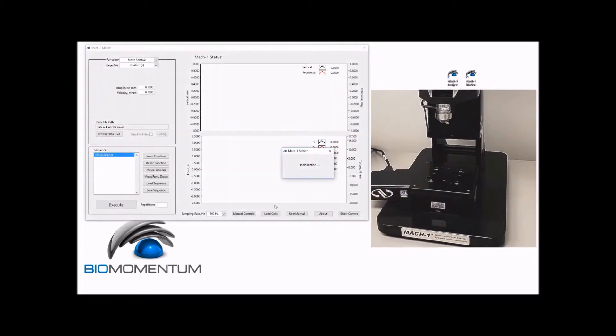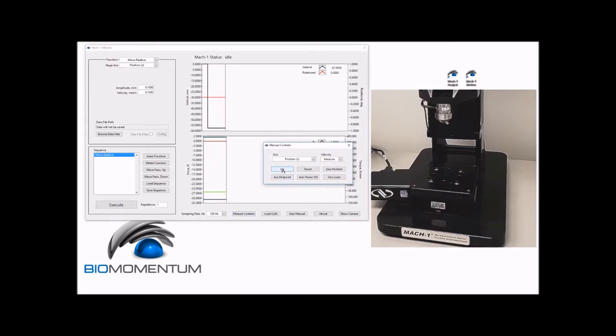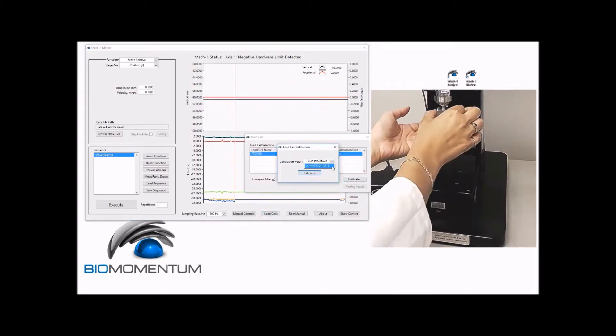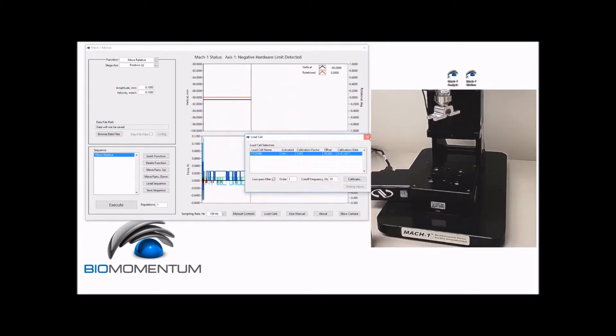Using the manual controls, raise the vertical stage to its maximum height using medium speed. Then verify load cell calibration as per the Maquan user manual.